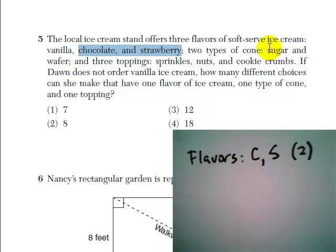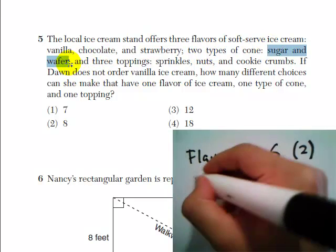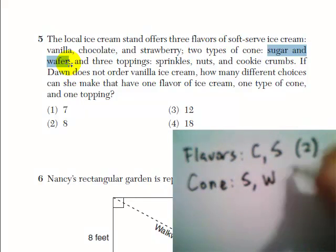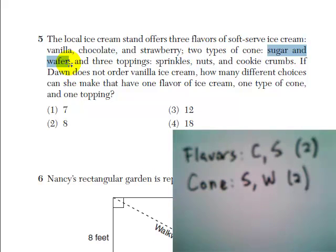For types of cone, we have sugar and wafer. Sugar and wafer, and there are two choices there as well.